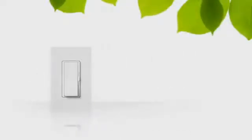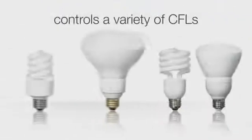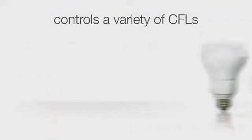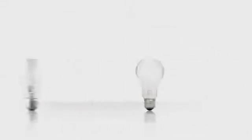Lutron C.L dimmers are UL listed for controlling a broad range of dimmable CFLs and LEDs. They offer more reliable dimming performance over standard dimmers when dimming these bulbs and can also be used with incandescent and halogen bulbs.